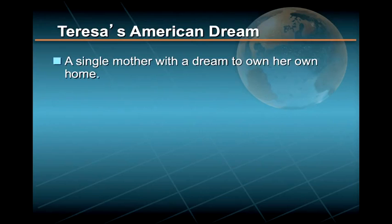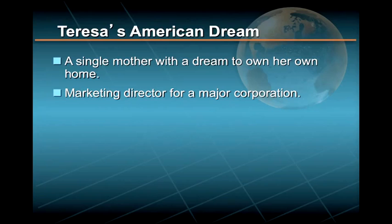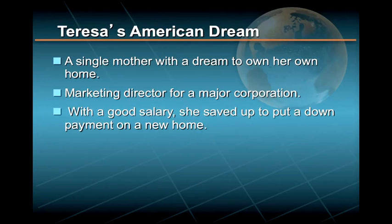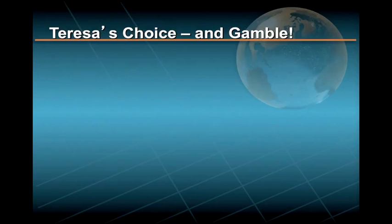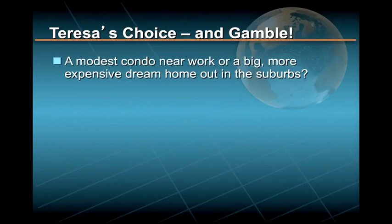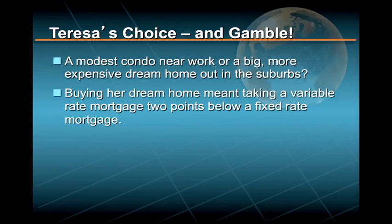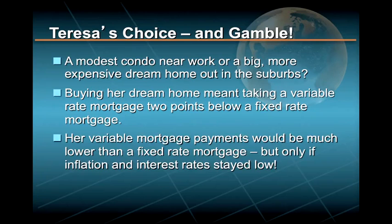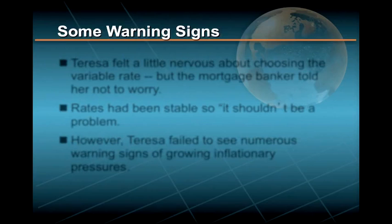Teresa is a single working mother whose big dream in life is to own her own home. As the marketing director for a major corporation, Teresa earns a good salary, and some years ago she had saved $25,000 for a house down payment. After months of looking, Teresa's choice had boiled down to either a modest two-bedroom condo near her job in the city, or her dream home — a more expensive single-family house out in the valley. After talking it over with a mortgage banker, Teresa decided that the only way she could afford her dream home was to take out a variable-rate mortgage, available at a full two percentage points below the fixed-rate mortgage, with monthly payments several hundred dollars less — but only if interest rates stayed low.